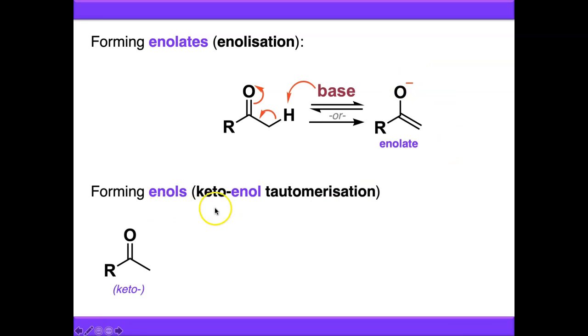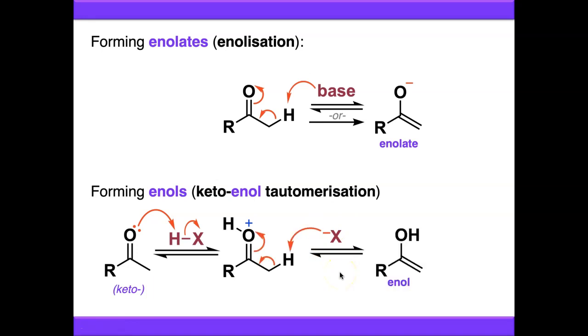What about forming enols? This is now keto-enol tautomerization. We can refer to our parent carbonyl compound as being in the keto form in this instance. We can promote keto-enol tautomerization by treating it with a strong acid. We can protonate the carbonyl, which gets us through to this protonated carbonyl species. We can then basically do the same as what's happening above, just using the conjugate base of the acid that we were using, which now removes the alpha proton, and we end up with our enol form here.